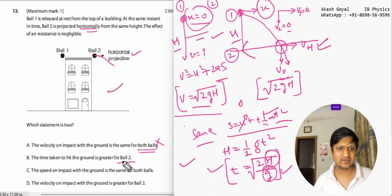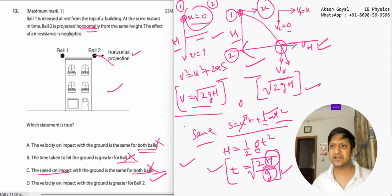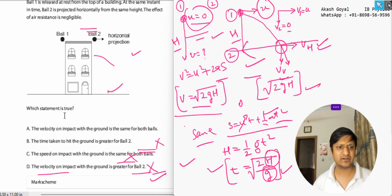So in this case, this is also wrong. The speed of the impact is also different. Magnitude is also different, so it is also not same for both. The velocity of the impact is greater for 2 - yes, definitely. We have already concluded that it is greater. So our D option will be right.